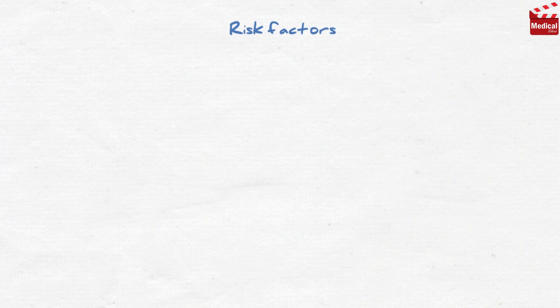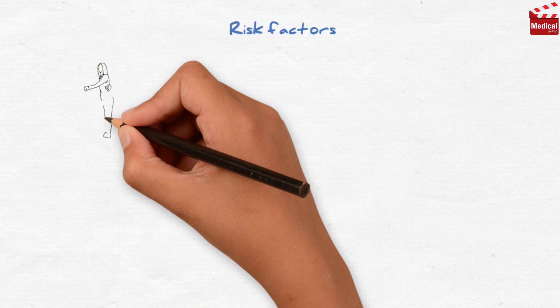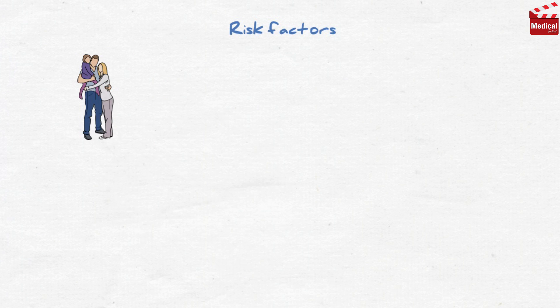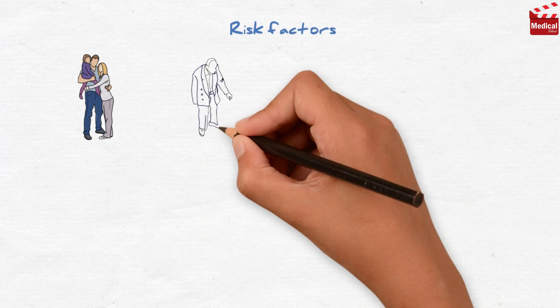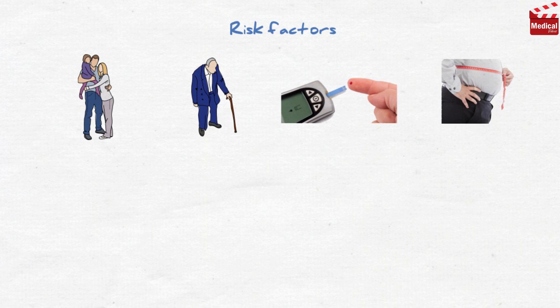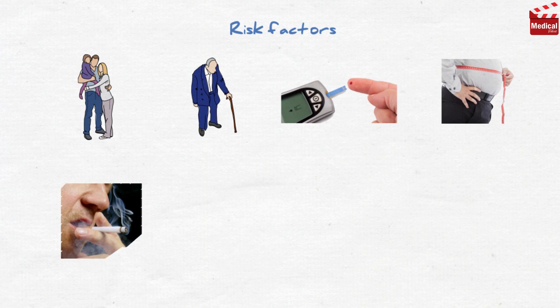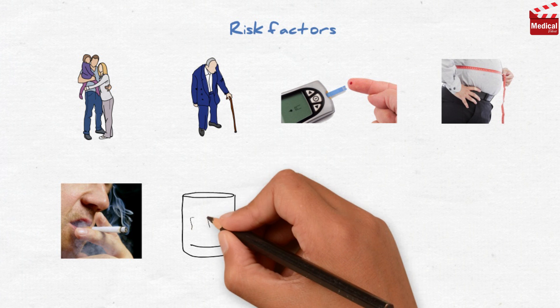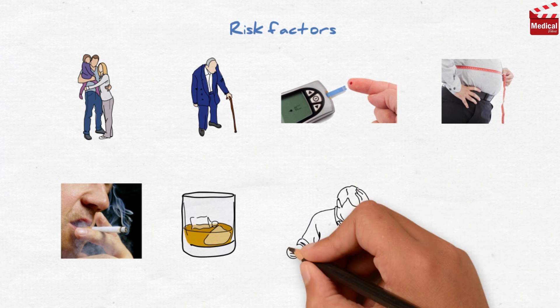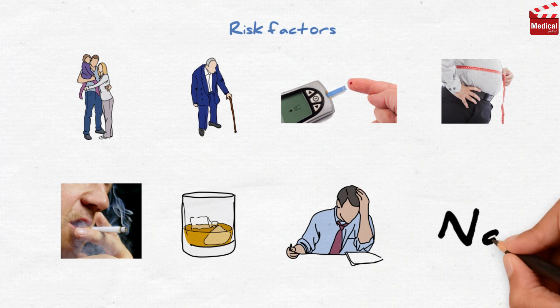There are some risk factors we should know. Family history of hypertension increases the chance to develop hypertension. Older age, diabetes, obesity, smoking, alcohol consumption, stressful lifestyle, and high dietary intake of sodium are also risk factors for hypertension.